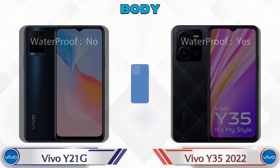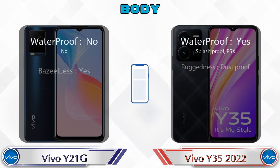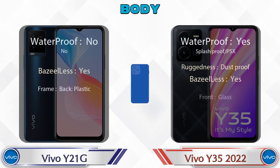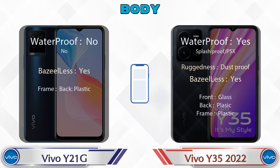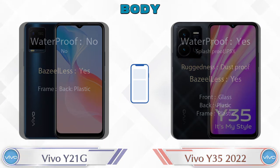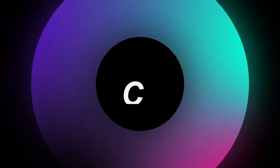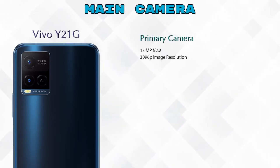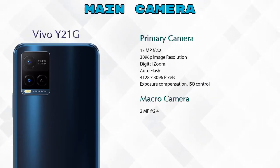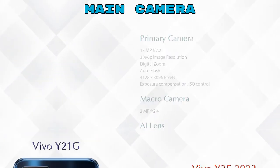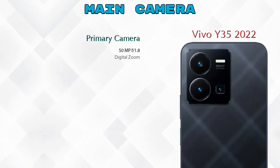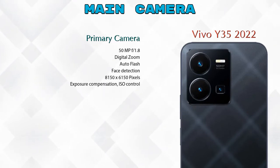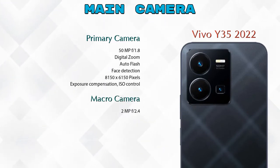Let's see the complete detail of the body of both phones. Now let's see the detail about our favorite feature: the camera. First, talking about the rear camera, we can see 3 cameras in Y21G: primary camera, macro camera, and AI lens. Y35 2022 also has 3 cameras: primary camera, macro camera, and depth camera.